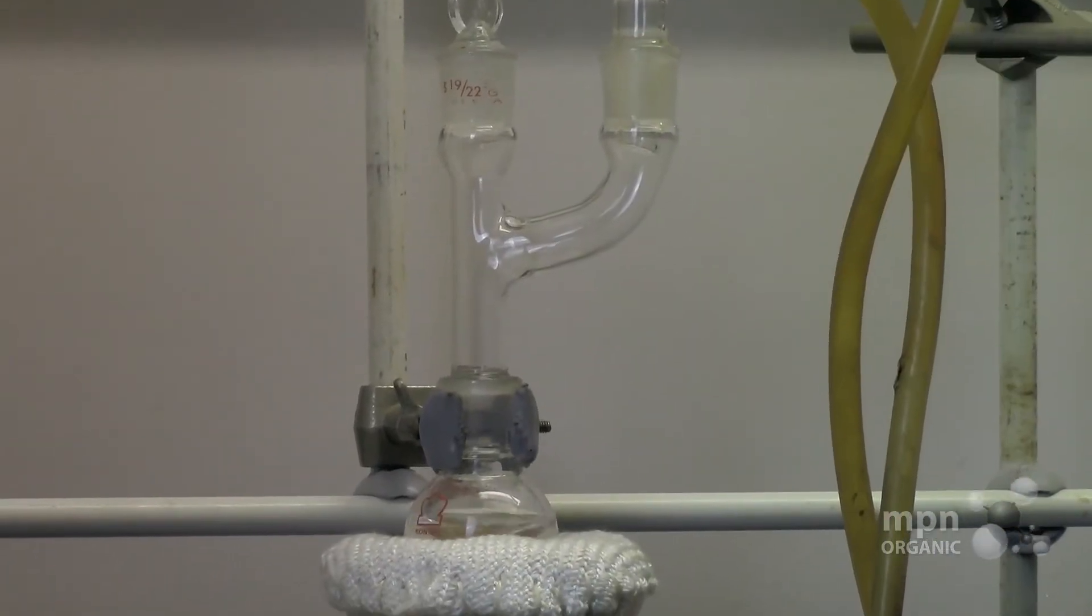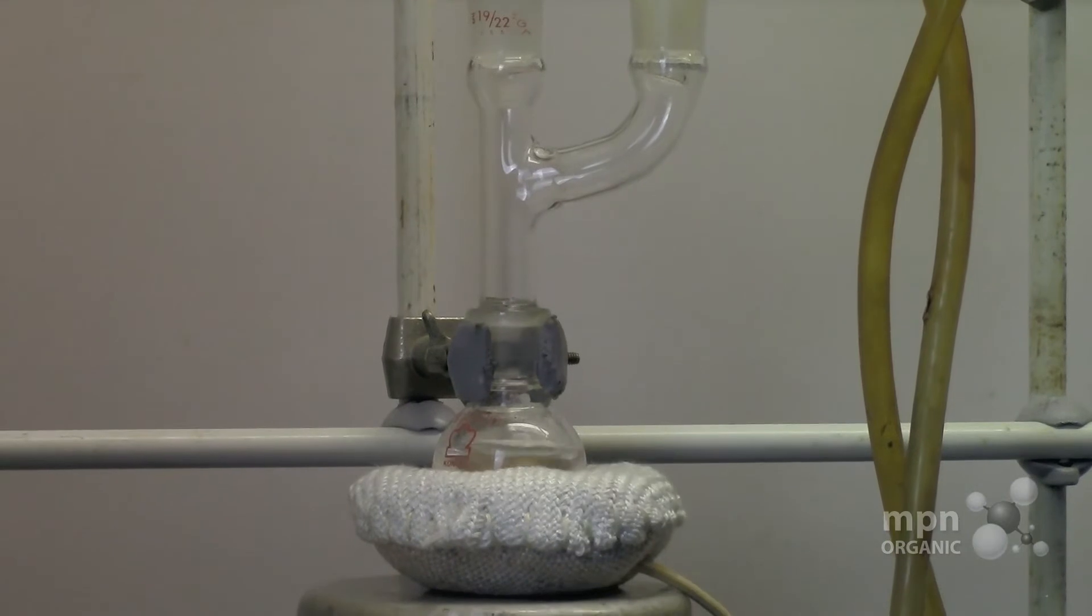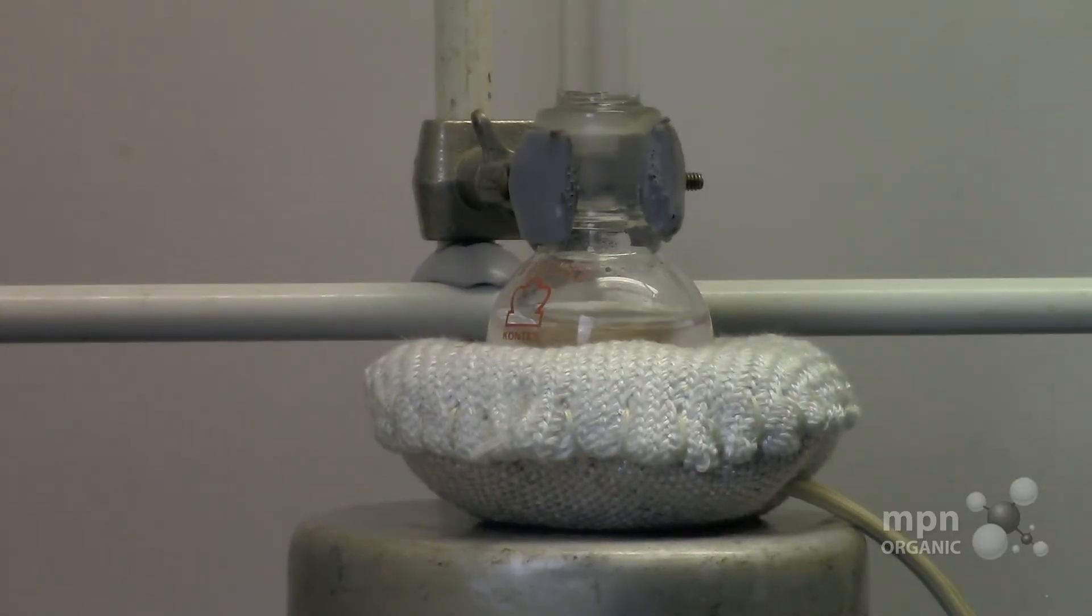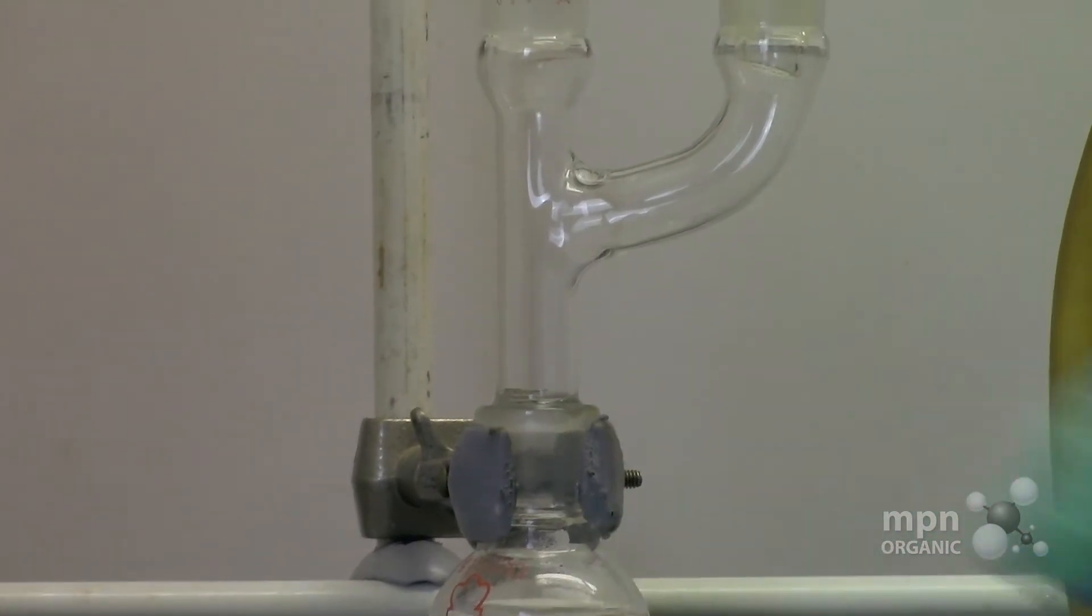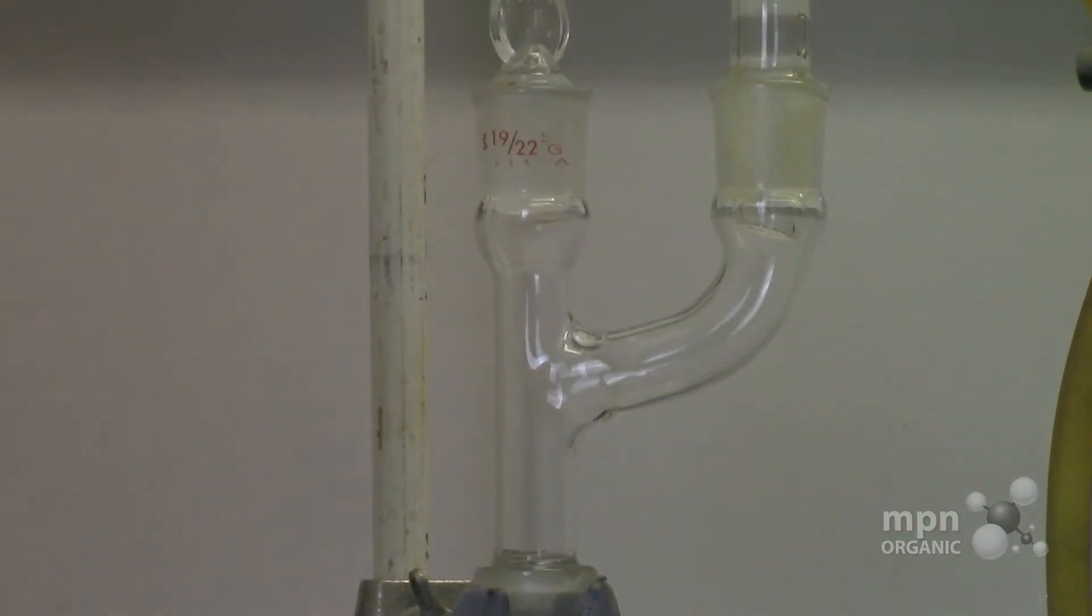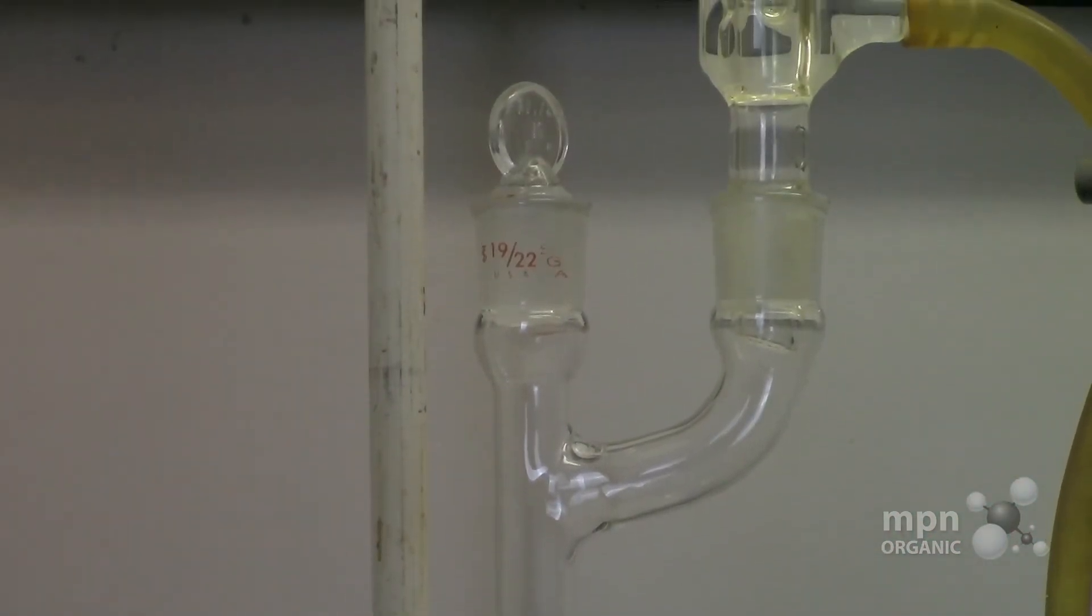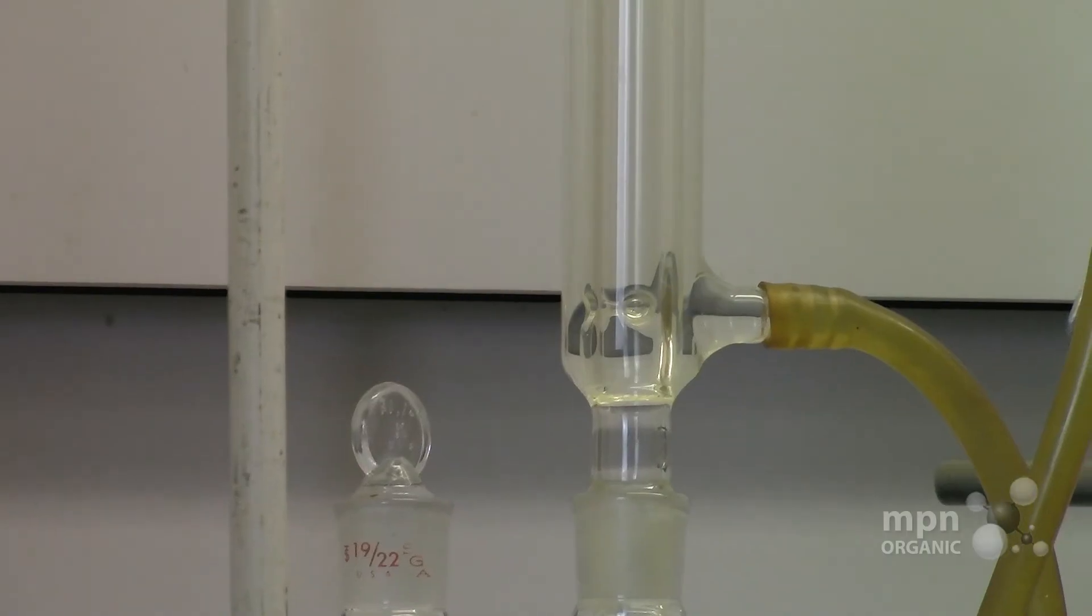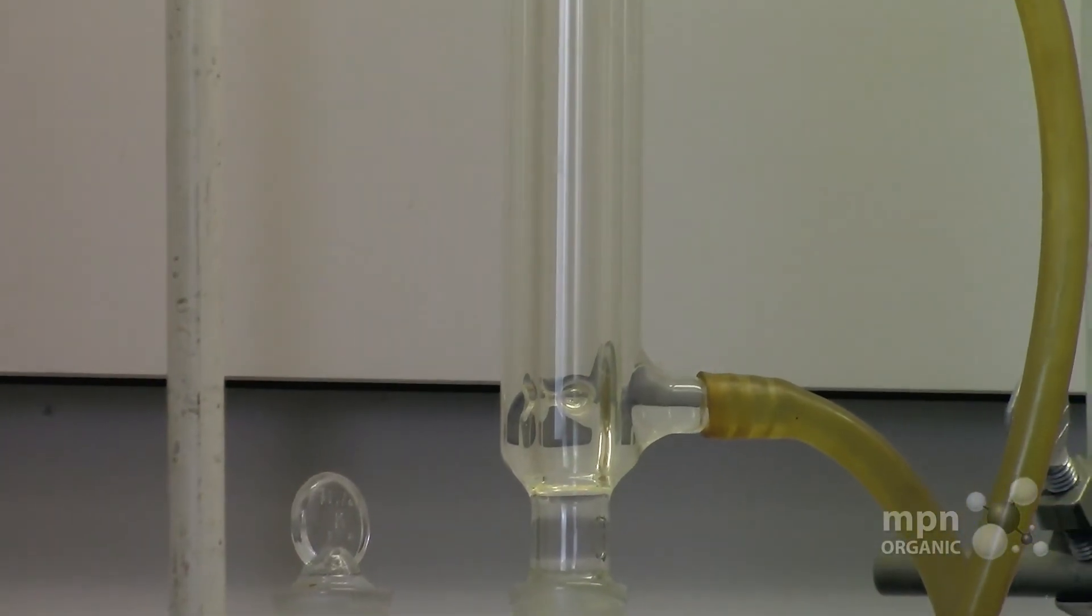And notice I don't have to use the Keck clamps when gravity is holding this thing all together. It's in a distillation that I have to be very careful that this will not separate from the main body of the round bottom that's over there. Okay, and that's how you can use the Claisen adapter as a piece of equipment for the reflux.